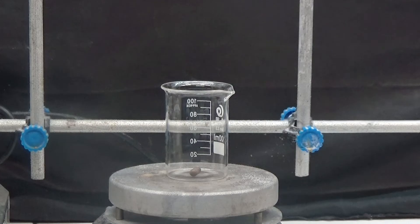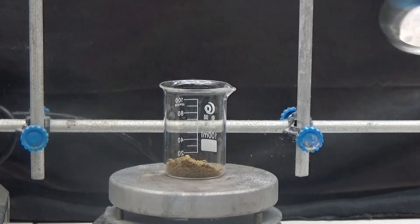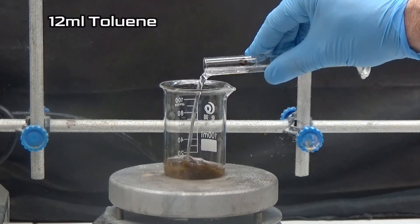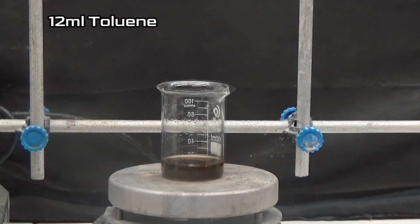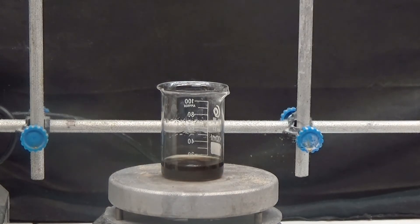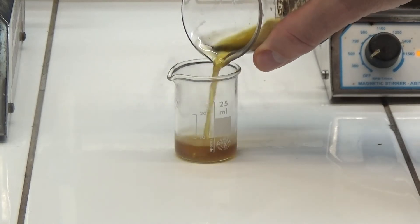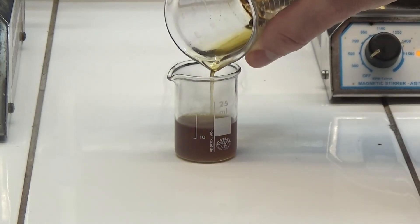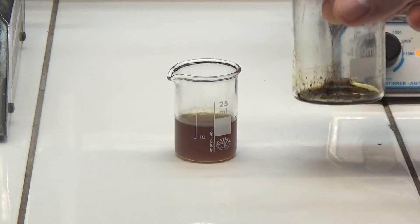To purify the catechol we are going to recrystallize it from toluene. Put the catechol obtained in a 100 milliliters beaker and add 12 milliliters of toluene. Heat until all the solid is dissolved. Put the hot solution in a 10 milliliters beaker. In the 100 milliliters beaker there remains a black residue at the bottom. We let it cool so that the catechol crystallizes.